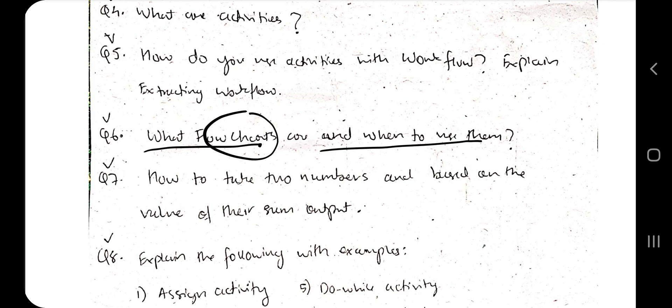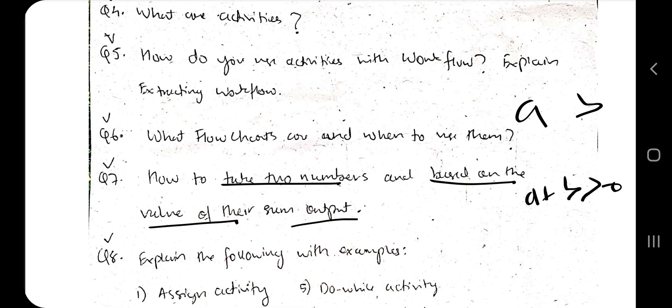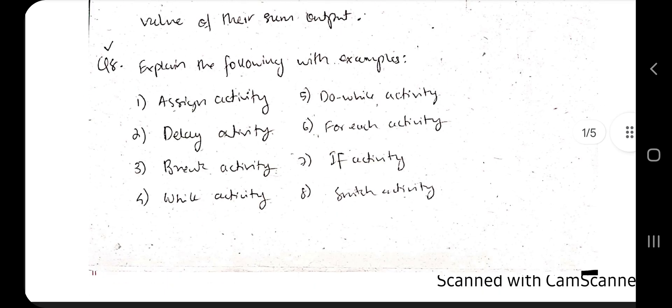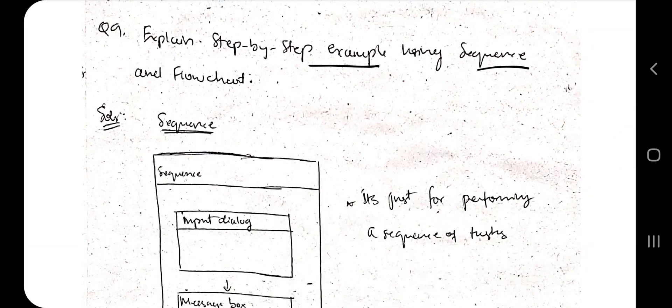What are flowcharts and when do you use them? Flowcharts are used when we have some conditions - based on that condition the flow should change. How to take two numbers based on their value and output their sum? Take two numbers a and b - if a plus b is greater than 20 then output true else output false. For that we will be using if condition. Explain the following with example - they can ask what is assign activity, delay, break, while, do while, for each, if, switch. All of these with examples I have explained in the video.